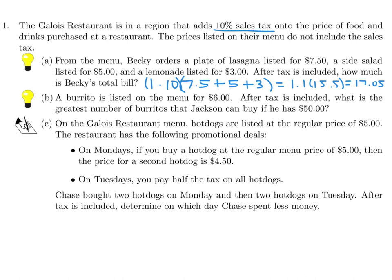A burrito is listed on the menu for $6. After tax is included, what is the greatest number of burritos that Jackson can buy if he has $50? He's going to buy n burritos. Each burrito is $6, so his total cost would be $6n, but we also have to add tax, so multiply by 1.1. We want this to be less than or equal to 50.